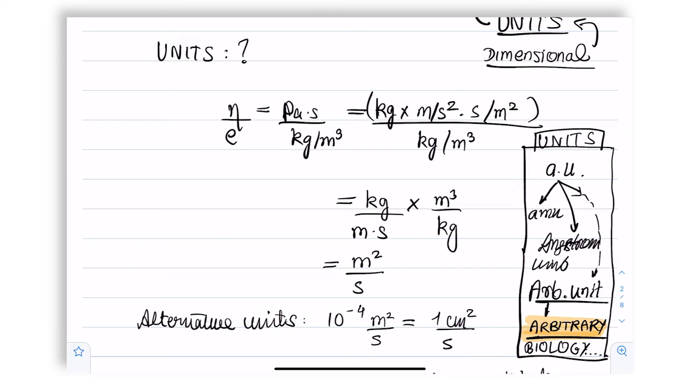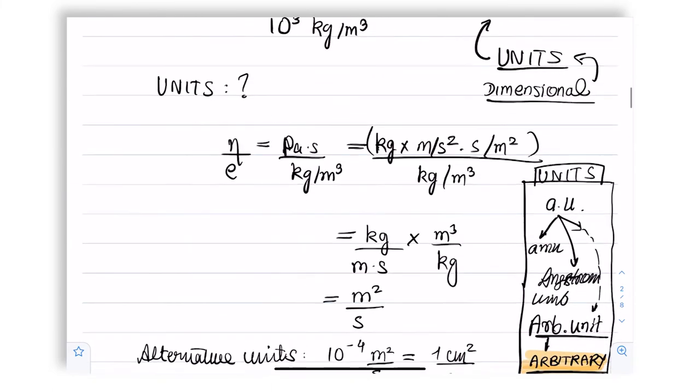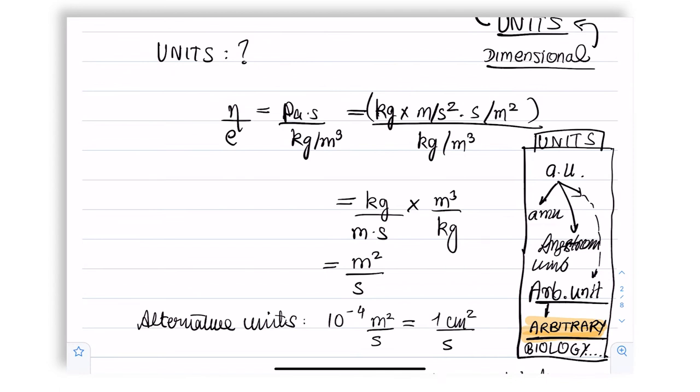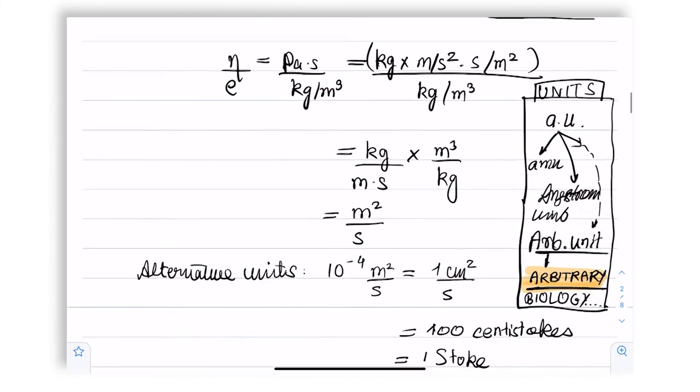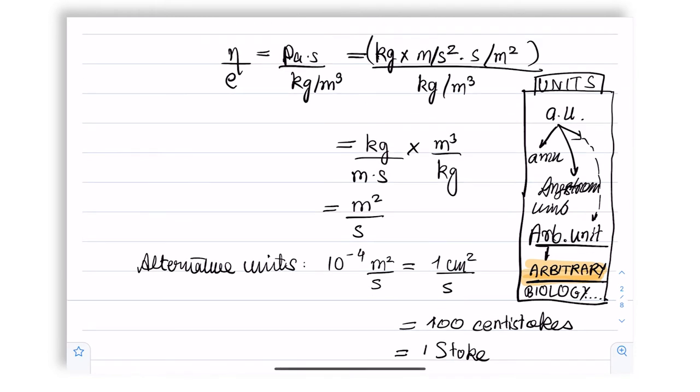So coming back to kinematic viscosity, we can also write kinematic viscosity in terms of centimeter squared per second. For water, the kinematic viscosity is 10 to the power minus 6. The conversion factor from meter squared per second to one centimeter squared per second is 10 to the power minus 4.